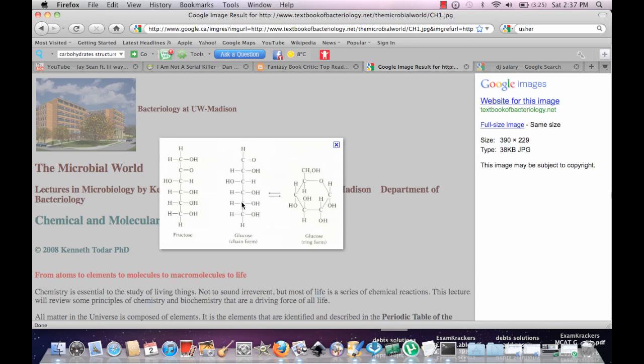That's why these are called hexose, because they have six carbons. Keep in mind that carbohydrates also have, for every carbon, two hydrogens and one oxygen.